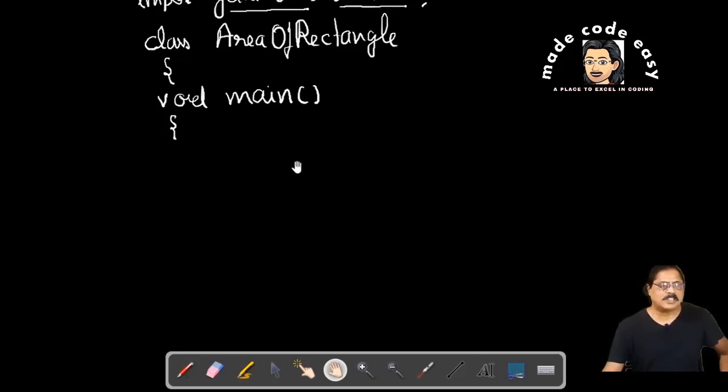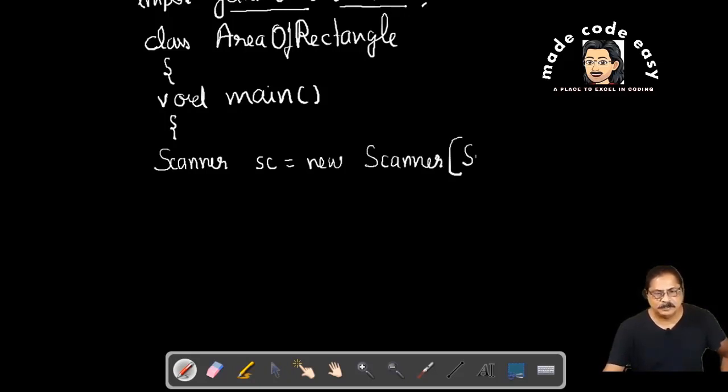Then we write scanner object, so what will I do? Scanner sc equals new Scanner(System.in). Scanner is written in capital letter because it's a class. System is also written in capital letter. Whichever is class, you have to write in capital letter.